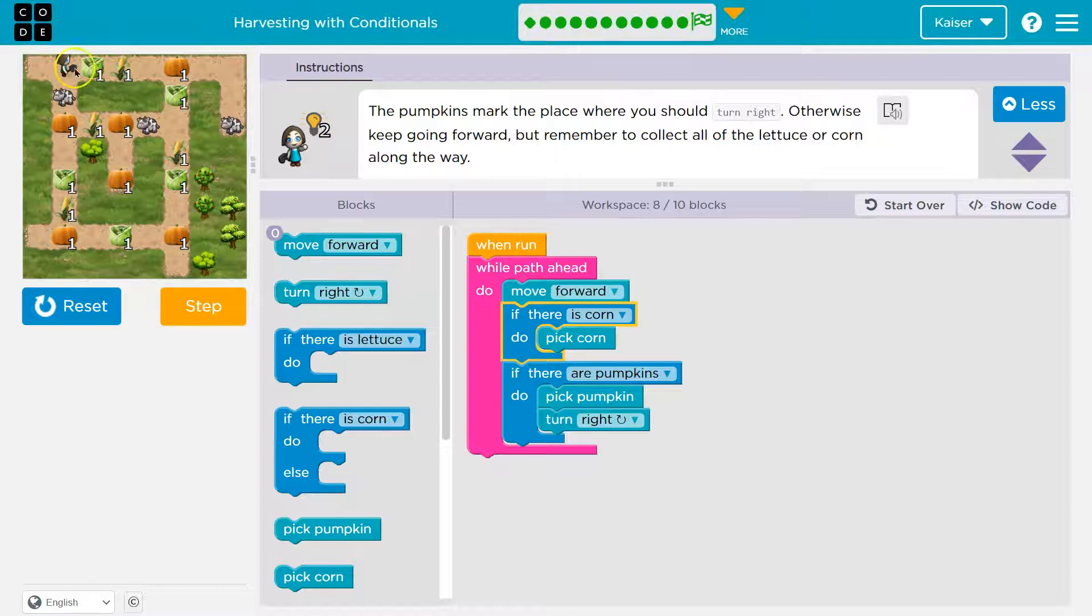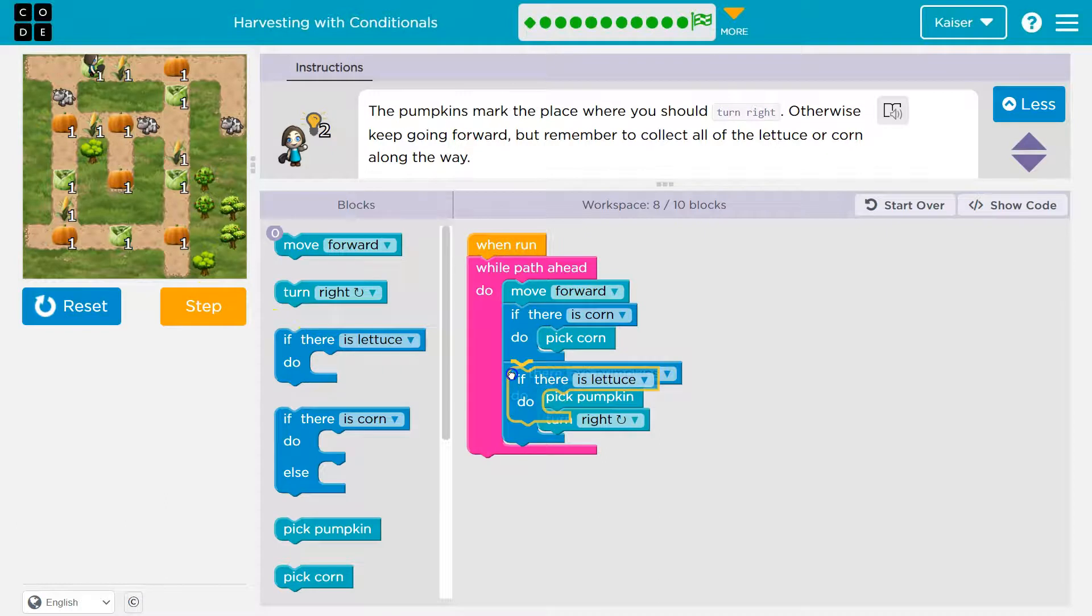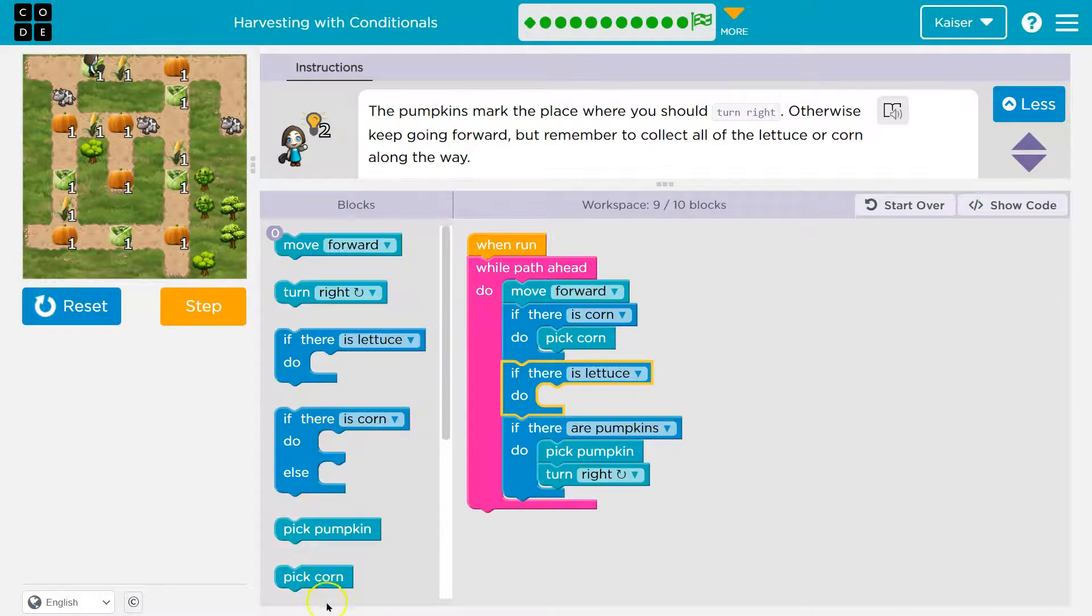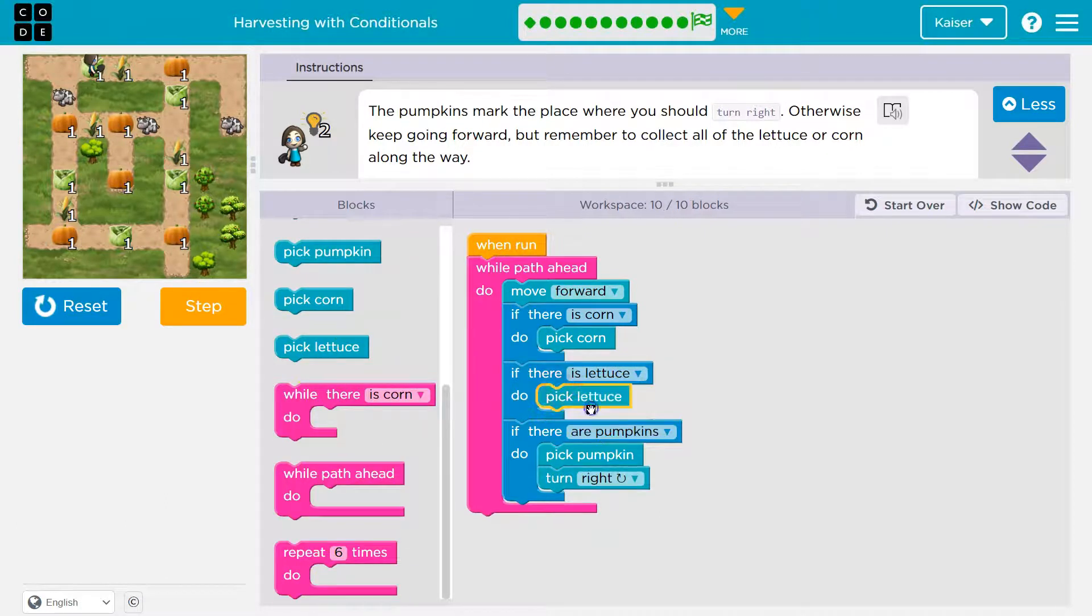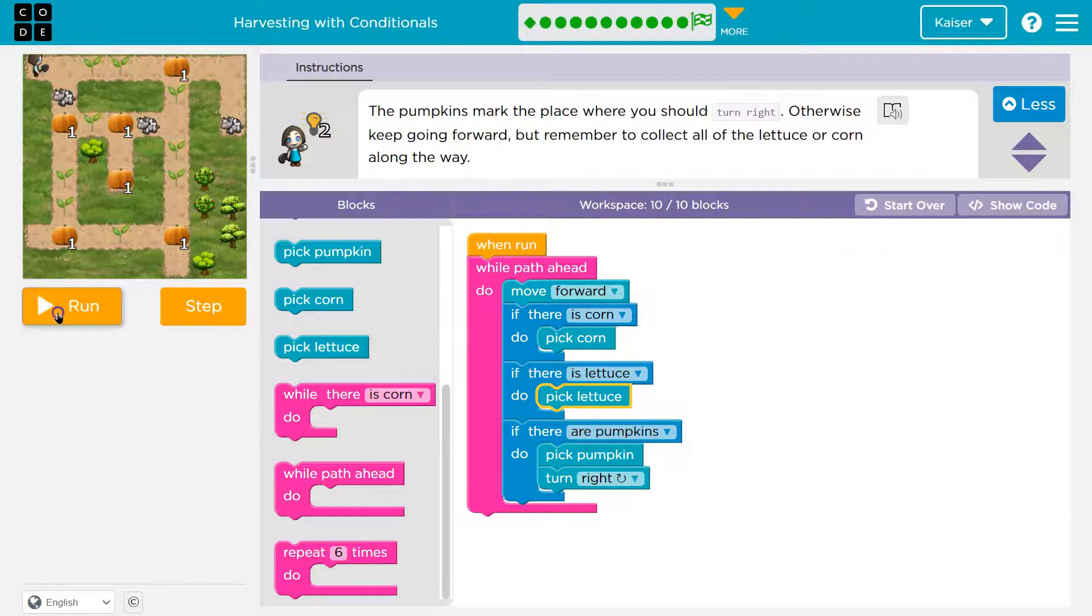Yes. So this is a conditional. This loop is as long as this is running, as long as there's path ahead. So while there is path ahead, move forward. I'll check, and you see the little radar go out. Right? Here. Little radar. Yep. There's path ahead of me, and what am I going to do? I'm going to step. I'll move forward. Then if there's corn, is there any corn here? False. This is false, so I don't pick.